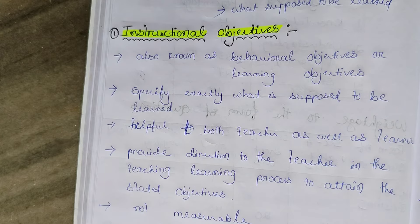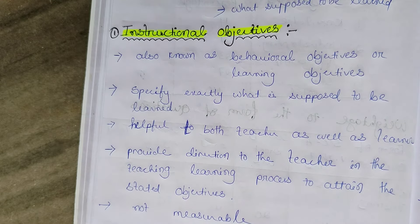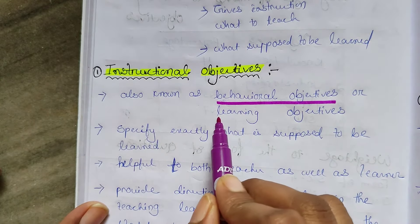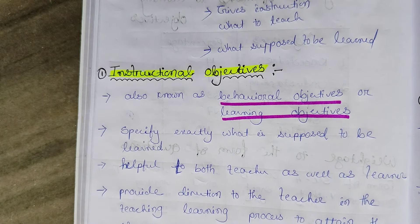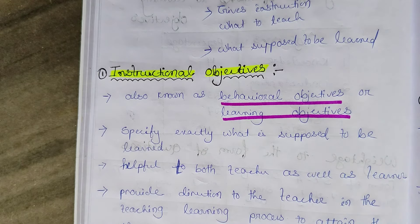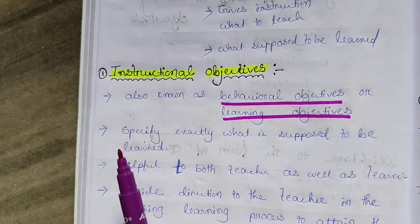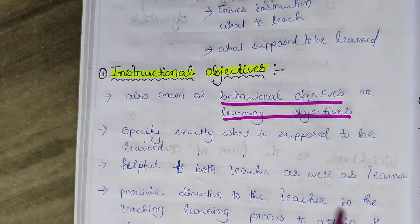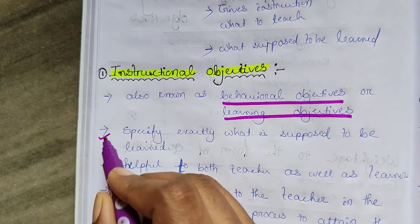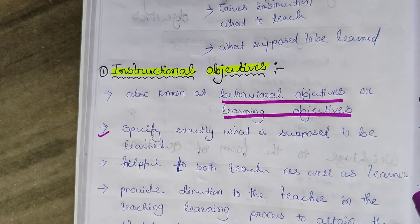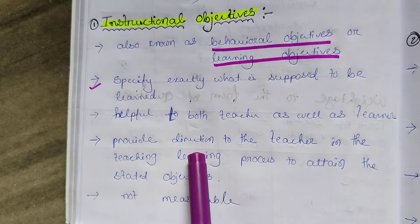Instructional objective is also known as behavioral objective or learning objective. It specifies exactly what is supposed to be learned. It specifies to the teacher what is supposed to be taught. It is helpful to both the teacher and the learner, and it provides direction to the teacher in the teaching-learning process to attain the stated objective.